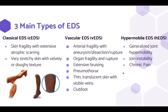The three main types of EDS are: Classical EDS, which is characterized by skin fragility with extensive atrophic scarring and very stretchy skin with a velvety or doughy texture. Vascular EDS, which is characterized by arterial fragility with aneurysm dissection or ruptures, organ fragility and rupture, extensive bruising, pneumothorax, and thin translucent skin with visible veins and club foot. And hypermobile EDS, which can be characterized by generalized joint hypermobility, joint instability, and chronic pain.